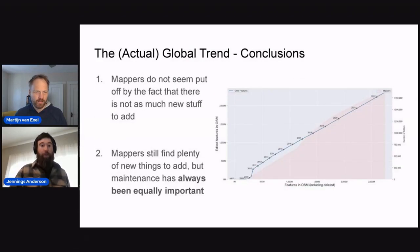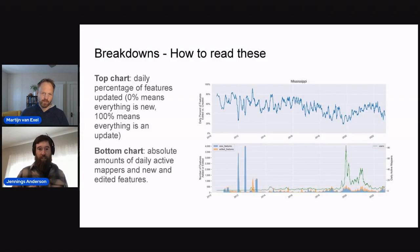And then we also see here this pink area in the back showing the number of users, which also tends to be this linear growth of actual active contributors here. So it is interesting, we see what Alan was calling this singularity, where we do see this really healthy balance. And so what does this imply? Next slide. So yeah, we see that mappers are not put off by the fact that there's not as much new stuff to add. They are still adding stuff and also editing at this linear rate, this consistent rate.